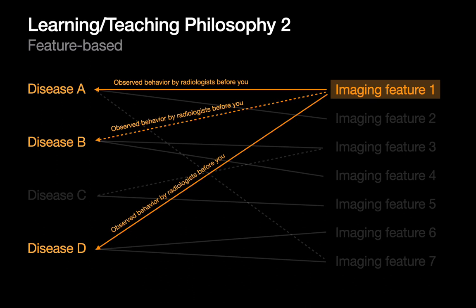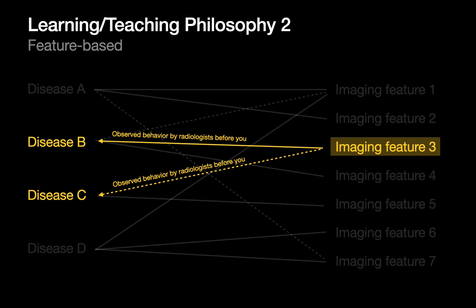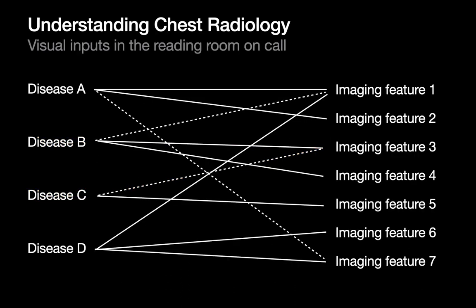Instead of learning disease A and the imaging features it presents with, and disease B and its imaging features, we can approach things from the perspective of imaging features. We learn about a particular imaging feature and the diseases associated with it, then another imaging feature and the diseases associated with that. As first-year residents beginning to learn chest radiology, approaching it from the perspective of imaging features as a way to organize our approach might make a lot of sense.